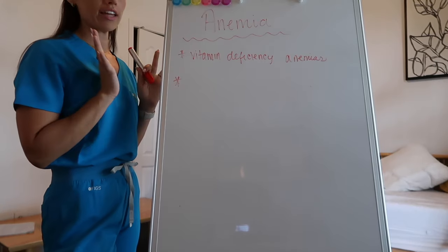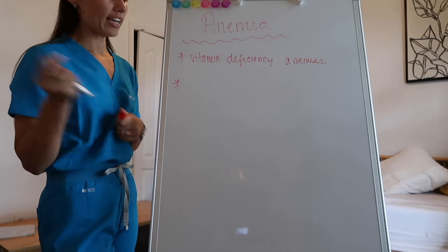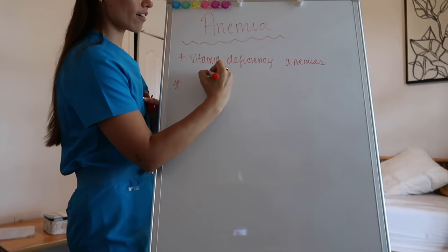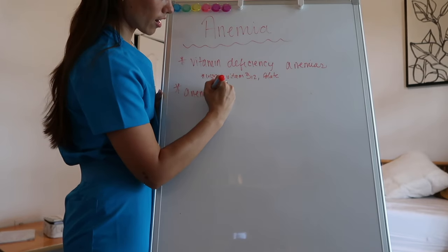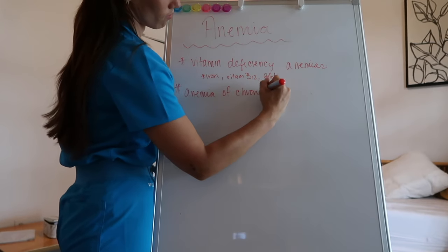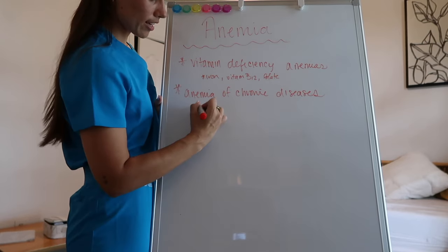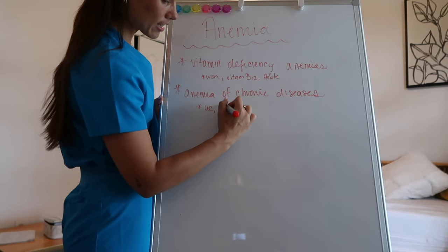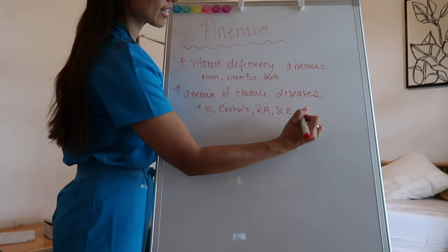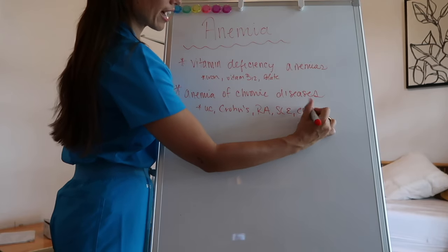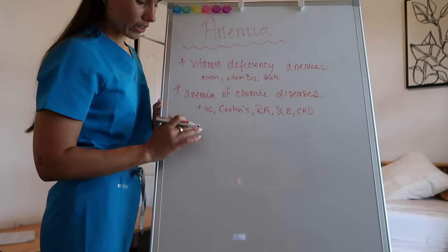As always, I like to start off by differentiating the types of anemias we're dealing with. We're going to cover three main ones today: your vitamin deficiency anemias — which you can think of as your iron deficiencies and your vitamin B12 — and we're also going to talk about anemia of chronic diseases. When you're thinking of chronic diseases and anemia, think of disease processes like ulcerative colitis, Crohn's disease, rheumatoid arthritis, lupus, and chronic kidney disease. Obviously there are a lot of other chronic diseases that could cause anemia, but those are just a few to keep at the top of your mind.